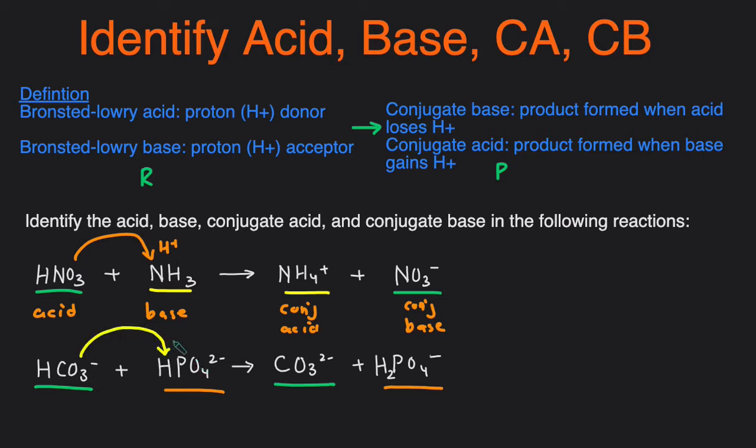So that means that's going to be giving up an H to the other reactant. So that makes this the acid because it has lost the proton. This one is going to be the base because it's gained a proton, and then it's the opposite on the other side. So if it's acid on this side, it's a conjugate base on the product side, and if it's a base on the reactant side, then it's a conjugate acid on the product side.